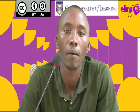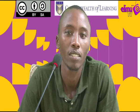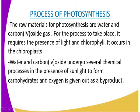As you know, photosynthesis is the process by which green plants make their own food. The raw materials for photosynthesis are water and carbon dioxide. For the process to take place, it requires the presence of light and chlorophyll. It occurs in the chloroplast, where we have the chlorophyll, which is the green coloring matter that enables the plant to absorb light energy.